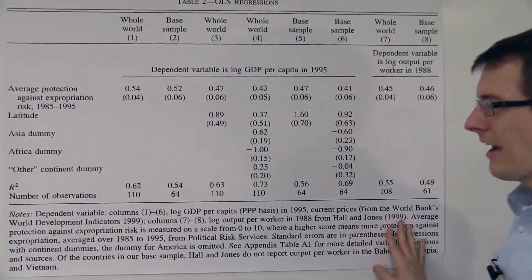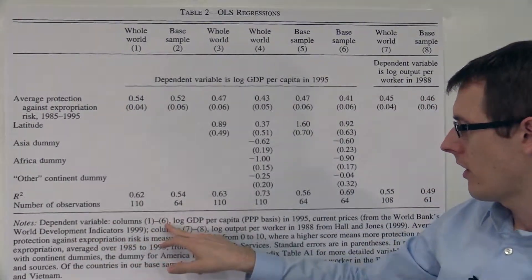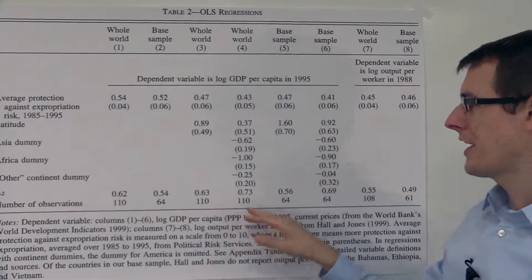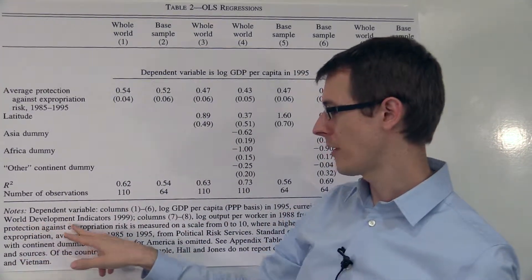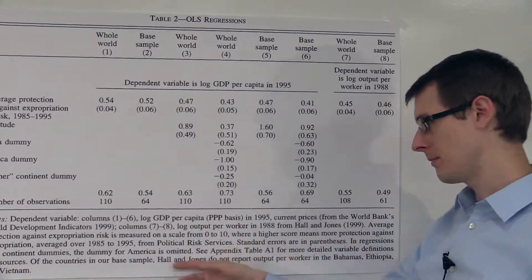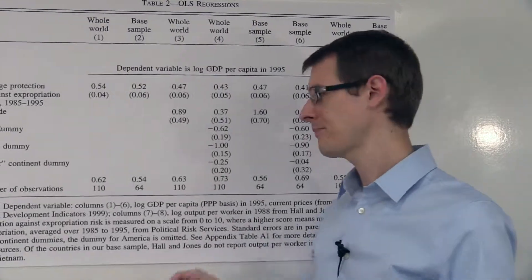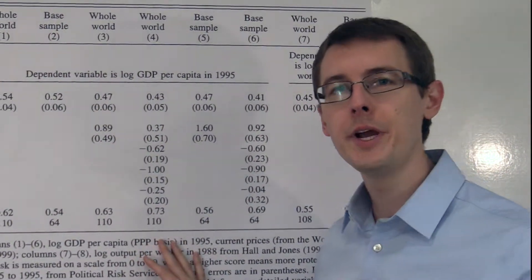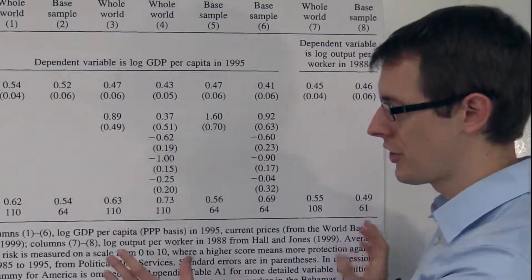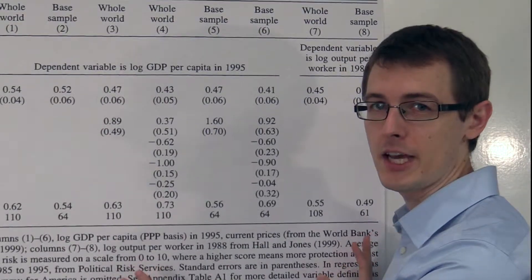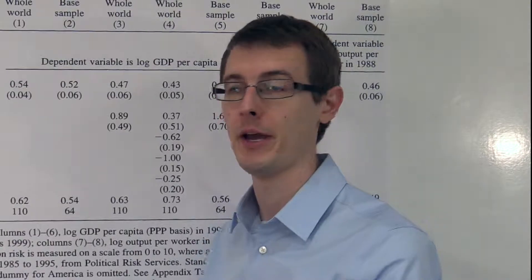Down here we just have some notes explaining more about the table: what's the dependent variable, what are some things about columns one through six, how are things measured, current prices from the World Bank's World Development Indicators 1999, and so on. There are also some references to the appendix. Remember, when you read a paper you should be able to read it by just looking at the tables, so the authors want to give you enough extra info in this table so you can understand what's going on without actually reading any of the body text in the paper.